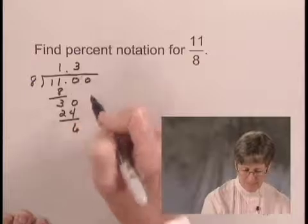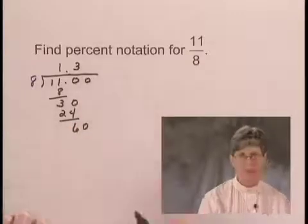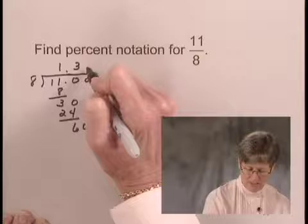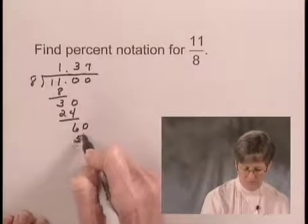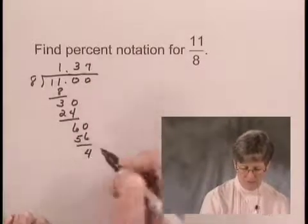We'll add another 0. 8 goes into 60 7 times. 7 times 8 is 56. The difference is 4.